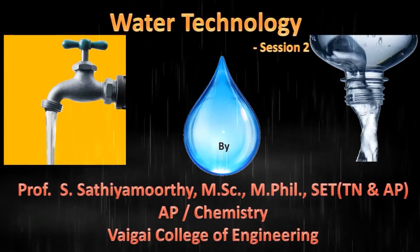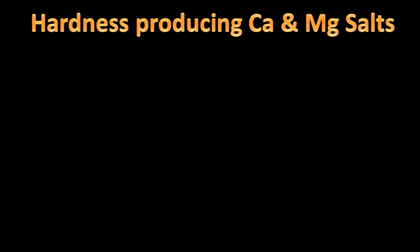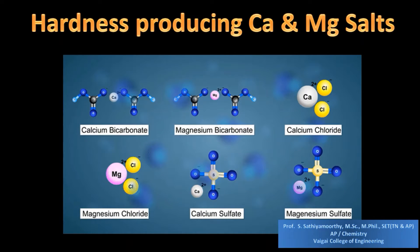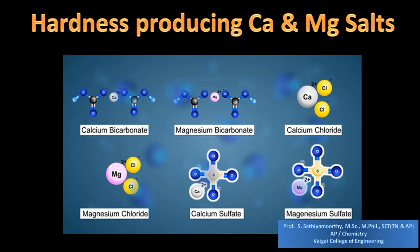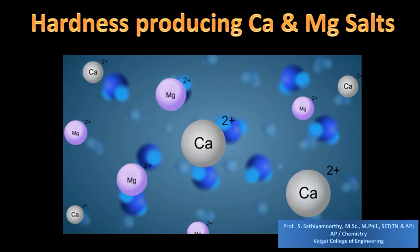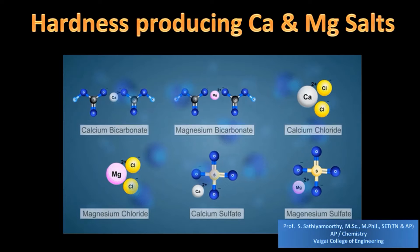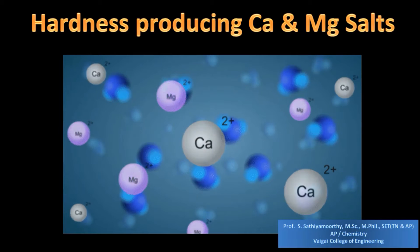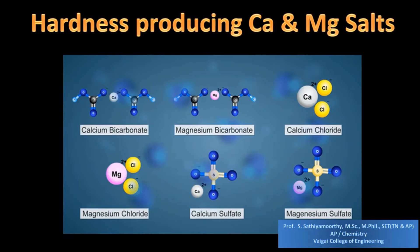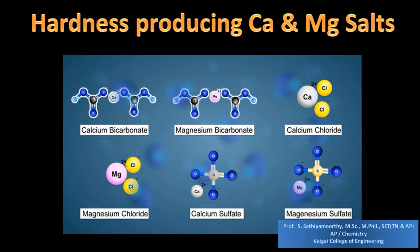We have already learned that dissolved calcium and magnesium salts produce hardness in water. The salts responsible for hardness are bicarbonates, chlorides, and sulfates of calcium and magnesium. These six salts are responsible for hardness in water; apart from these six salts, no other salts produce hardness in water.